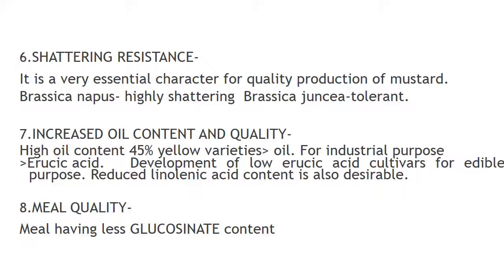The seventh objective is increased oil content and quality. High oil content of 45% is desired in yellow varieties. For industrial purposes, more erucic acid is desired; for edible oil purposes, less erucic acid is desired. Development of low erucic acid cultivars for edible purpose is a priority; reduced linolenic acid content is also desirable. For meal quality, low glucosinolate content is desirable. Major achievements include varieties Kranti, RLM 198, Varuna, Krishna, and Pusa Kalani, which are evergreen varieties with promising yield.